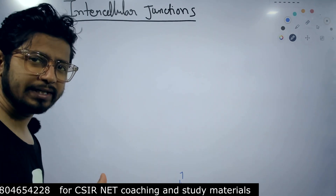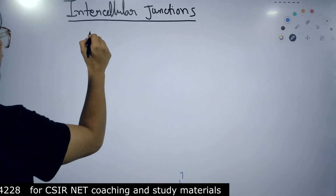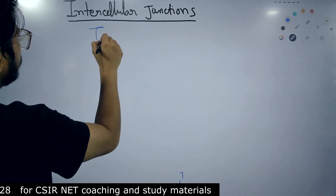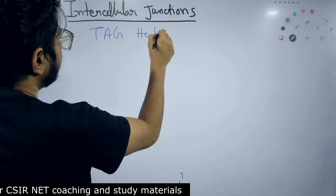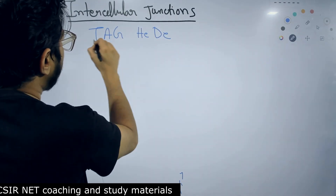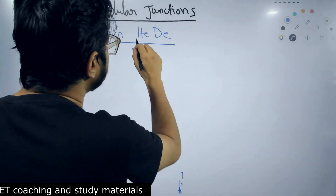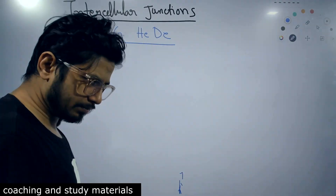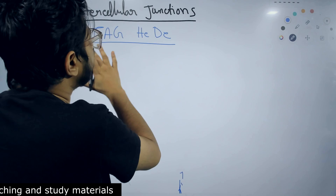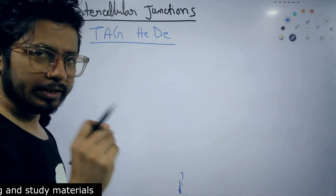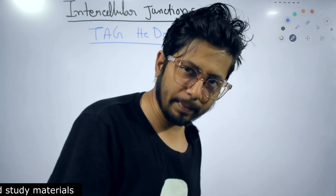With the help of this mnemonic I'll explain the easiest way you can remember the names of the proteins involved. First of all, you need to remember 'TAG HEADY.' Tag is a tag-along thing, Heady is someone's name. TAG HEADY is the very first part of the mnemonic that you need to remember.